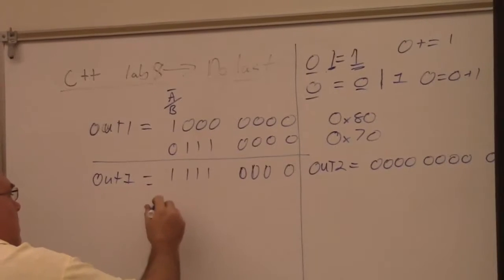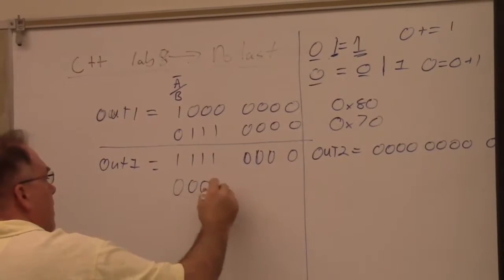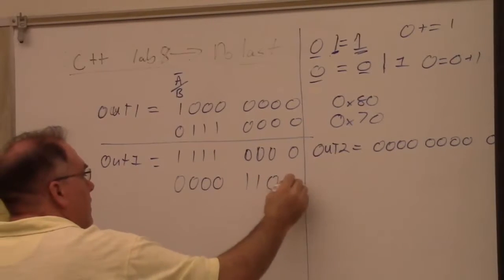So here's out 1, and we're oring it with 0, 0, 0, 0, 1, 1, 0, 0.